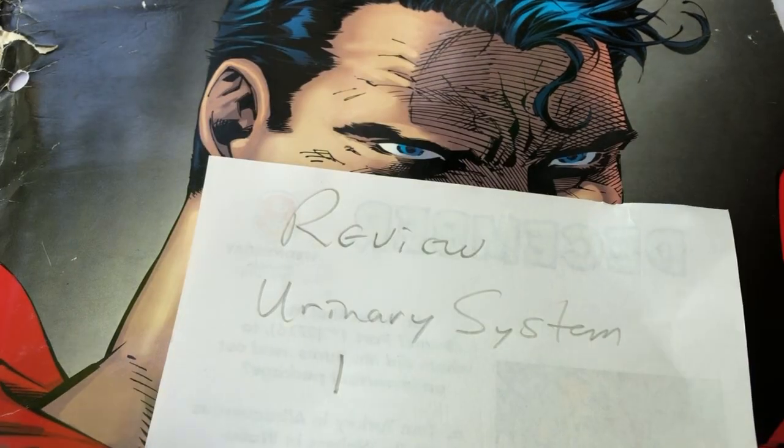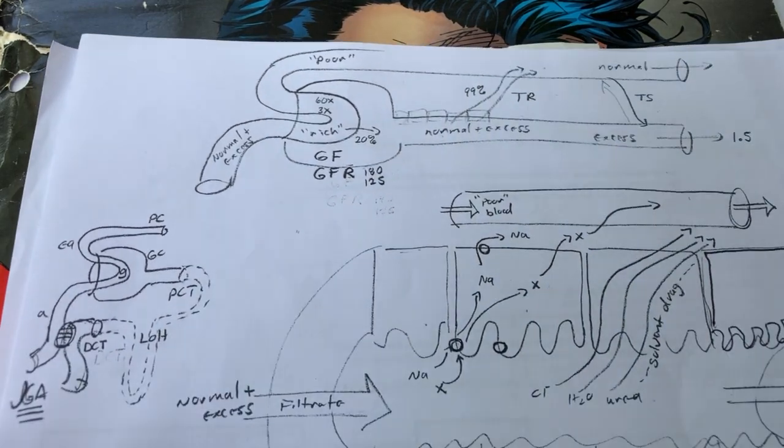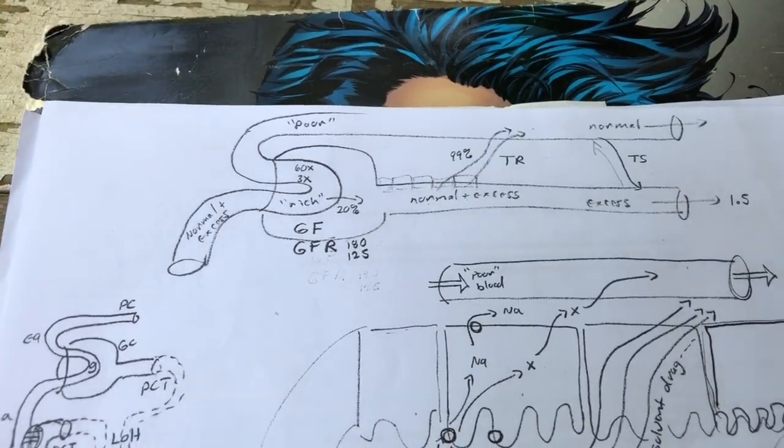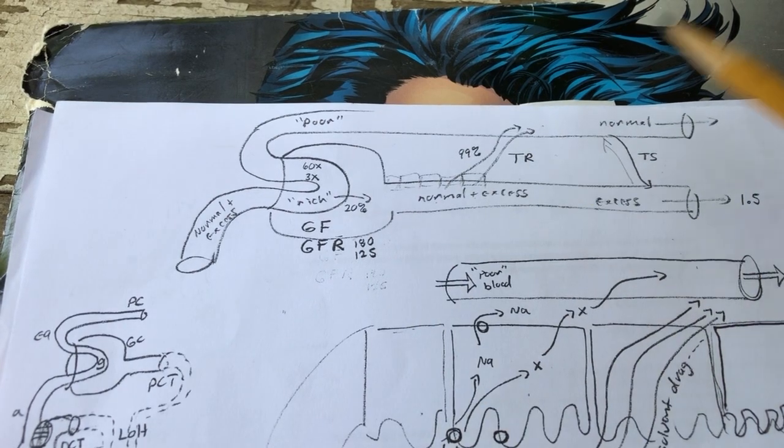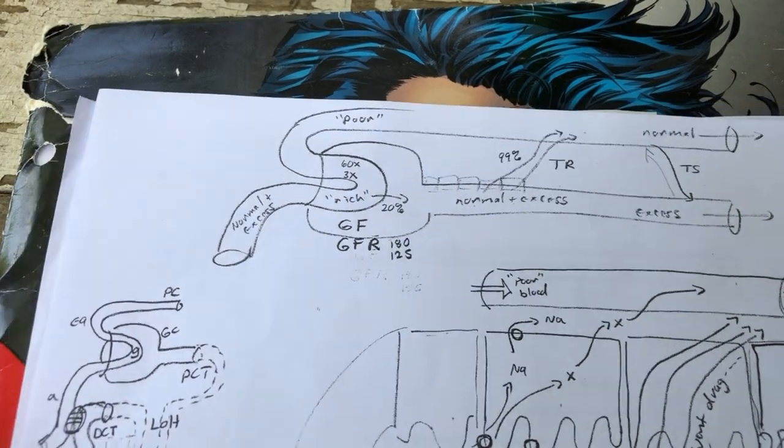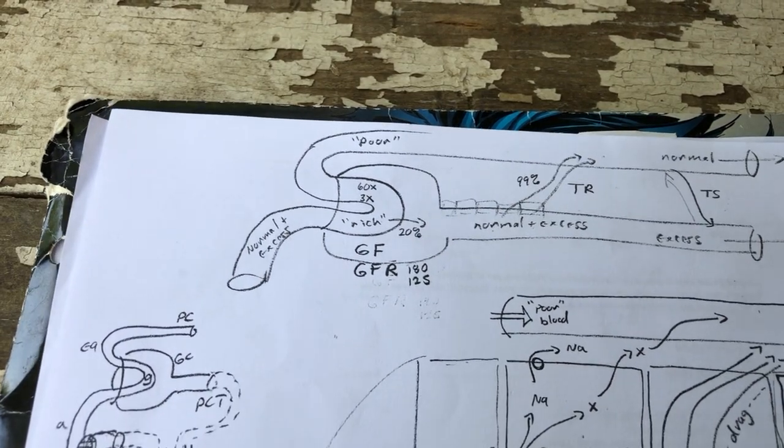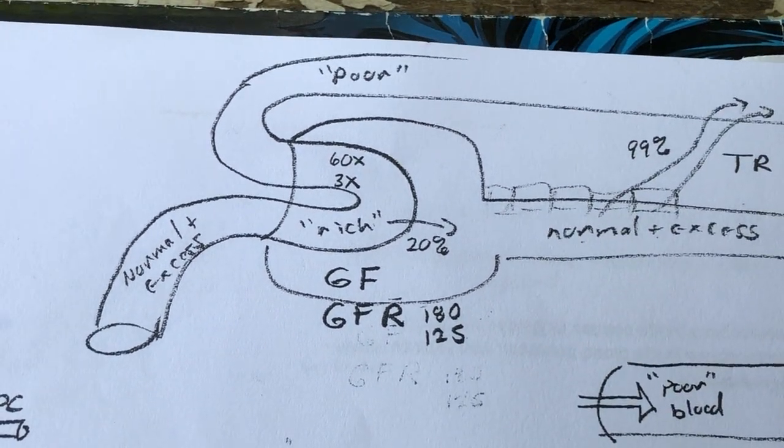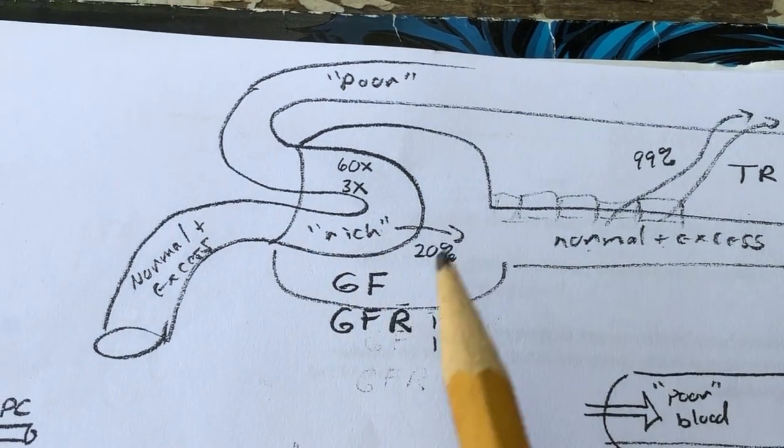Here we go again, urinary system review number one. Let's start off with the general processes of glomerular filtration, tubular reabsorption, and tubular secretion. In general, glomerular filtration is removing materials from the blood. Approximately 20% of the plasma that passes through the glomerulus is lost as filtrate with each pass.